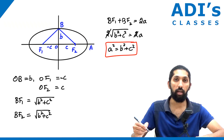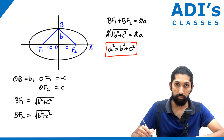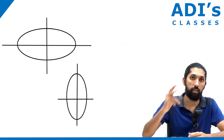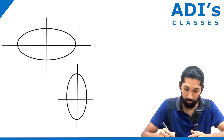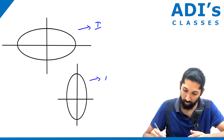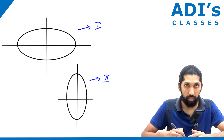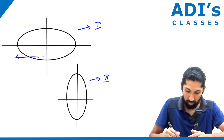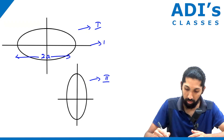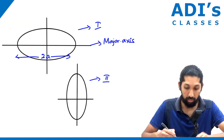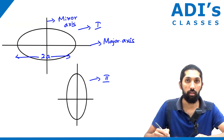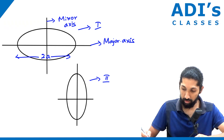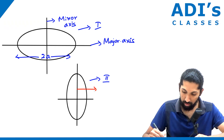With this relation we will calculate the equation of the ellipse. When it comes to the equation of an ellipse, there are two types. In Type 1, the x-axis is the major axis and the y-axis is the minor axis. In Type 2, the y-axis is the major axis.